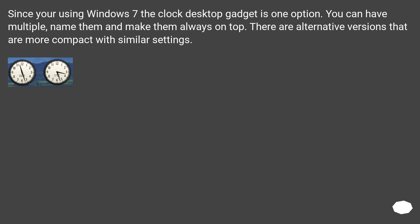Since you're using Windows 7, the clock desktop gadget is one option. You can have multiple clocks, name them, and make them always on top. There are alternative versions that are more compact with similar settings.